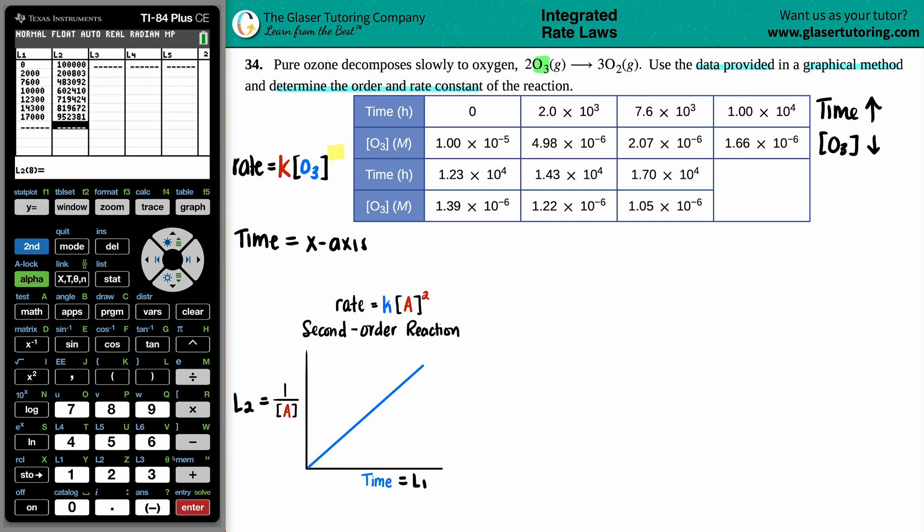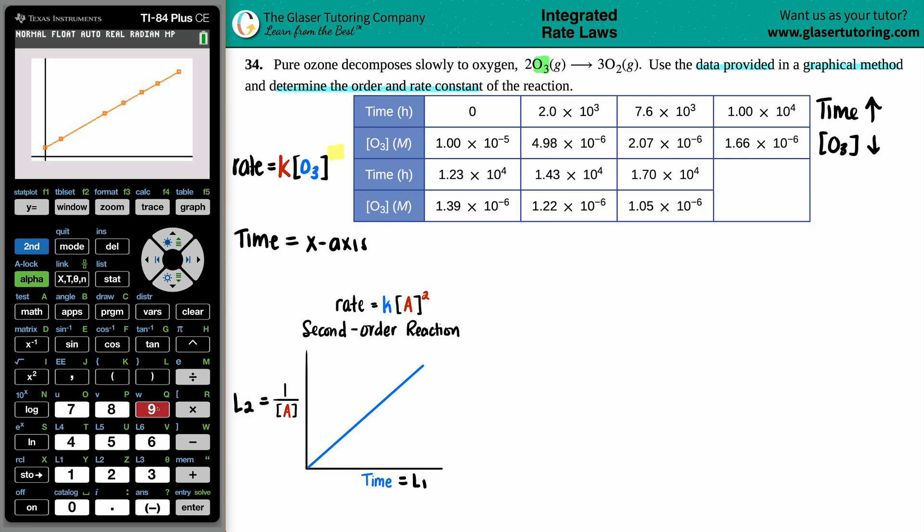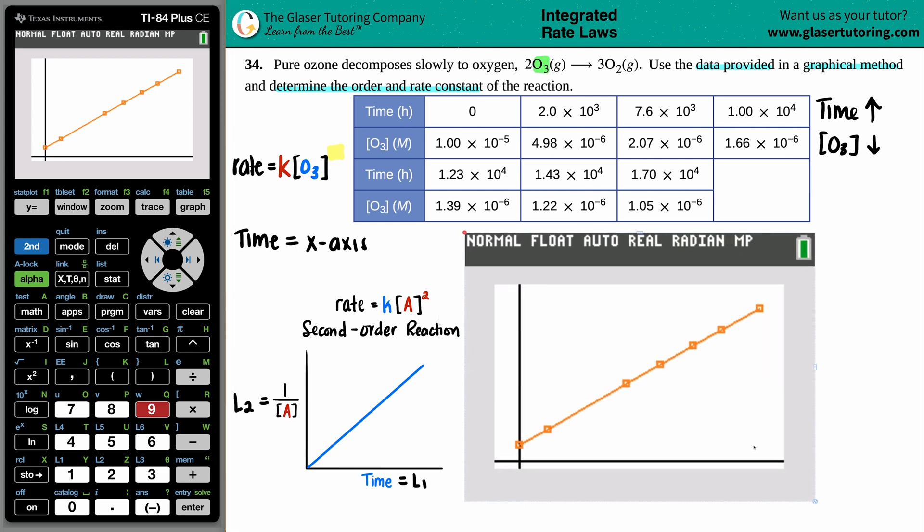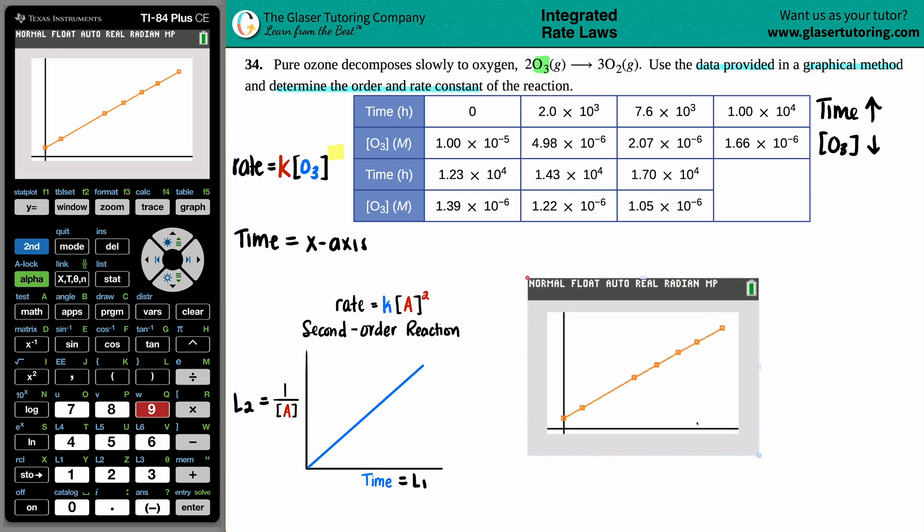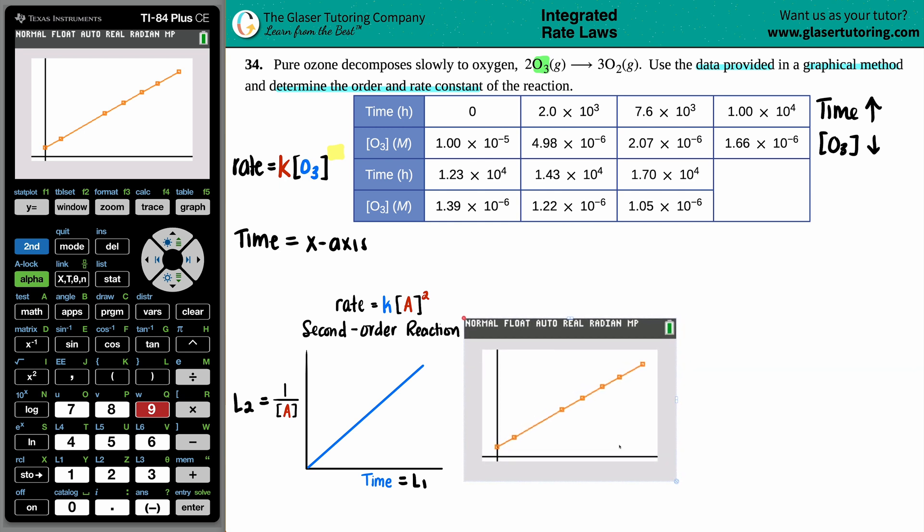Fingers crossed. If we don't get a linear line, that technically means that maybe we inputted something incorrectly in the beginning. So then we would go back. But let's see if we get the linear line here. Stat plot's already set up. So we just go to zoom. And nine. Wow. There it is. How beautiful. There's our line. It looks just like the line that we're supposed to get. So now we know that it's definitely a second order reaction, which means that it did follow the coefficient. So it would be a two.